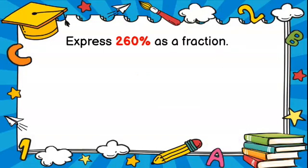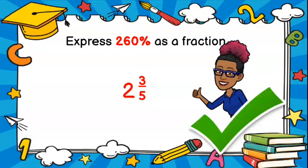Next problem: Express 260% as a fraction. The answer is 13 over 5, which is 2 and 3 fifths.